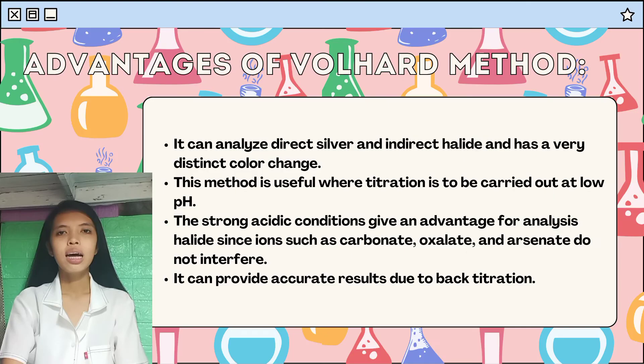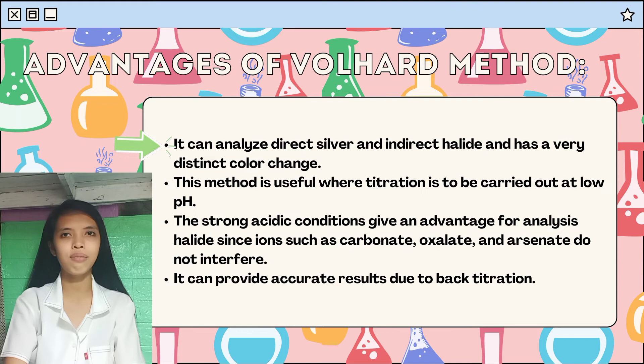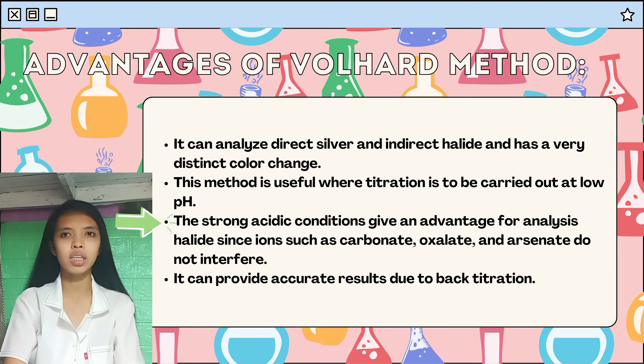The advantages of using Volhard's method are: it can analyze direct silver and indirect halide, and has a very distinct color change. This method is useful where titration is to be carried out at low pH. The strong acidic conditions give an advantage for analyzing halides since ions such as carbonate, oxalate, and arsenic do not interfere. And it can provide accurate results due to back titration.